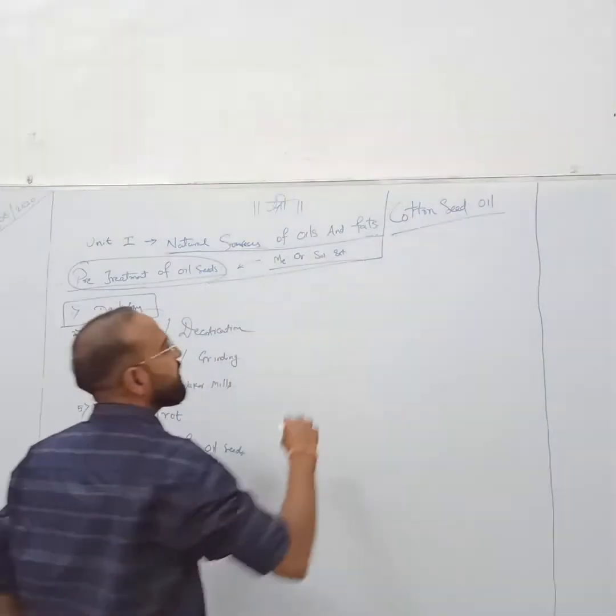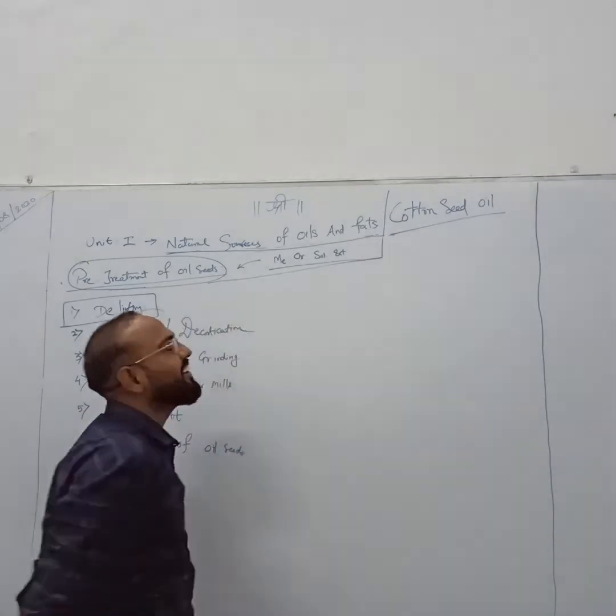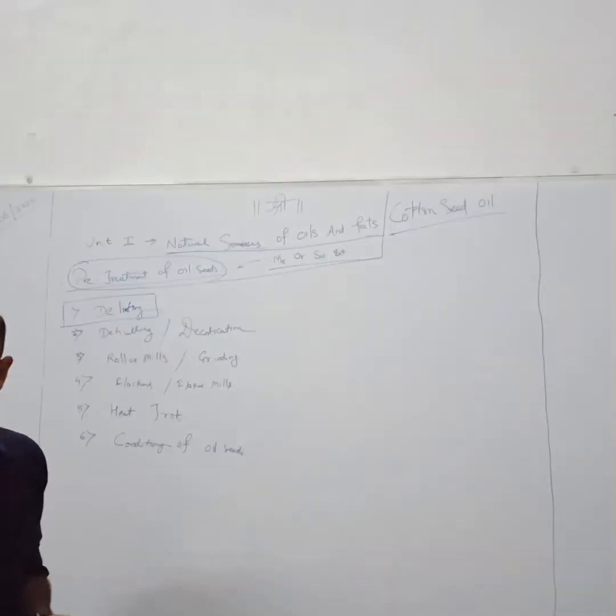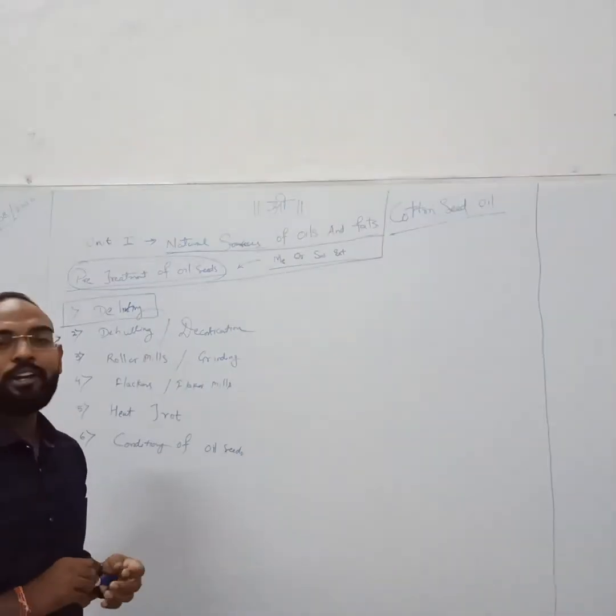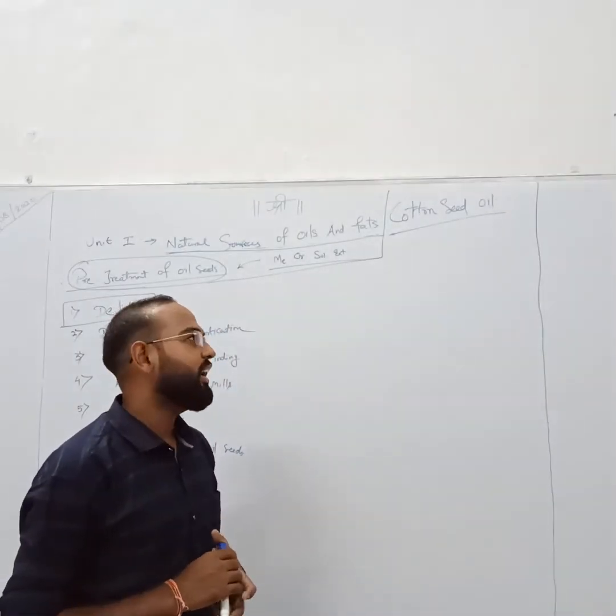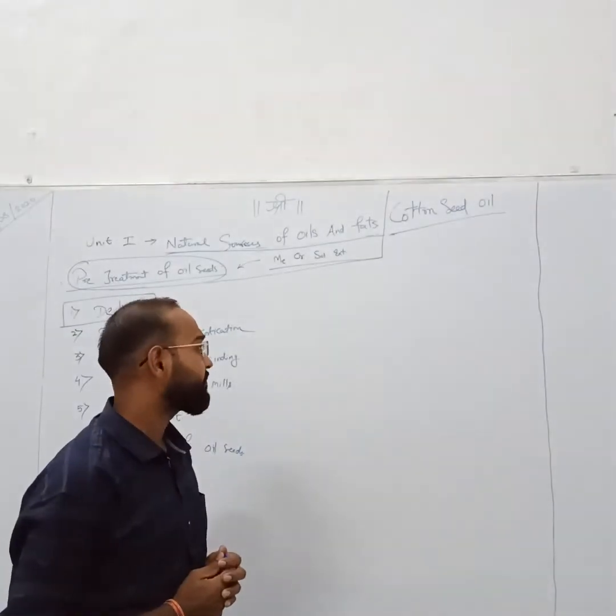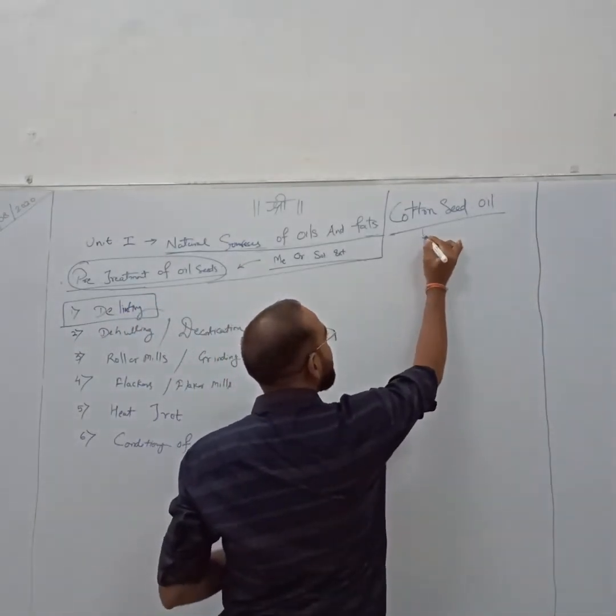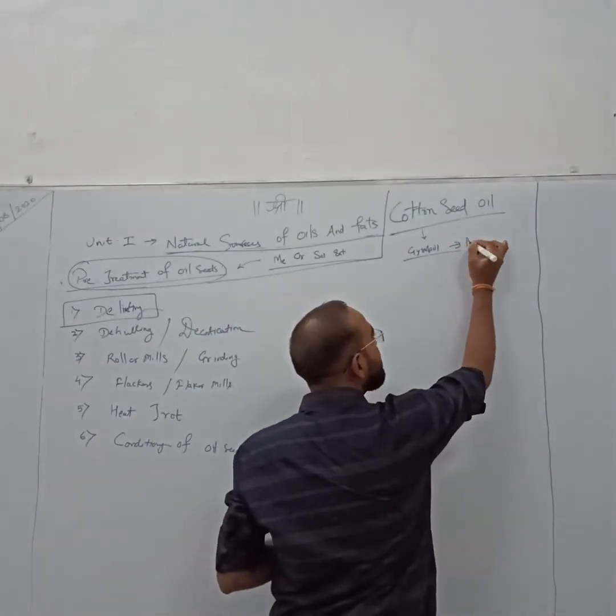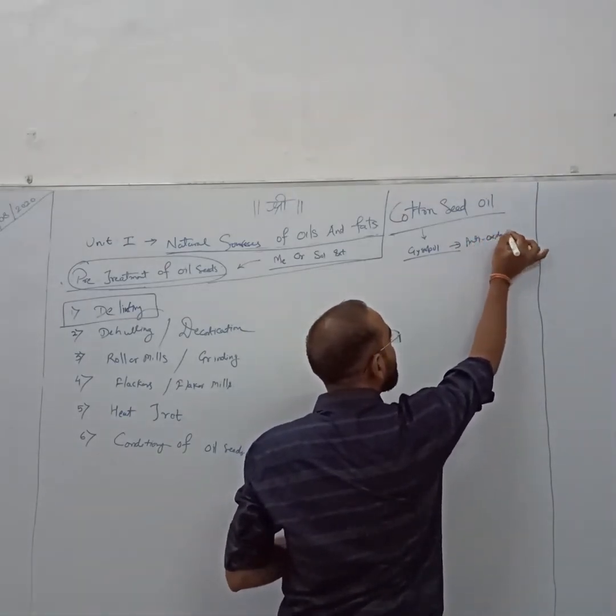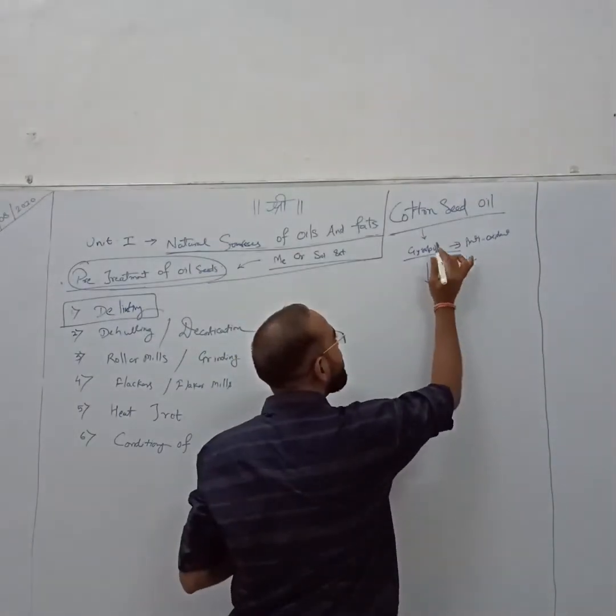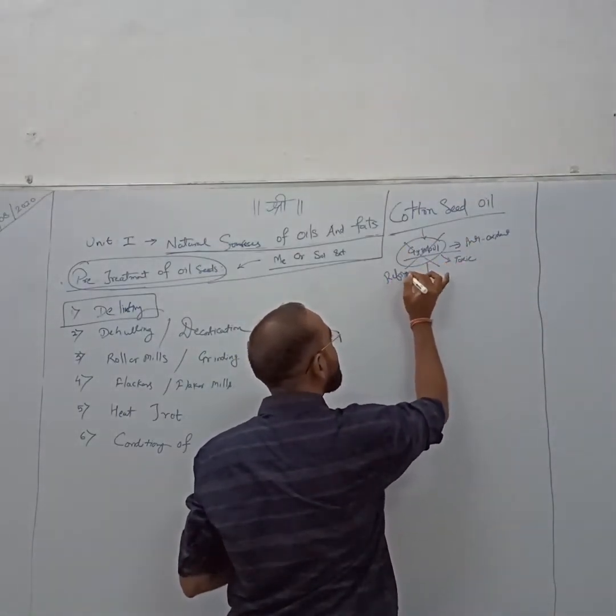Before starting the pretreatment, I just want to say few words about cotton seed oil. Cotton seed oil is basically dark reddish in color with a strong odor. It is useful in both food and non-food applications. In non-food applications it is useful in pesticides and insecticides. In food applications it is used as a cooking oil. Then it contains one component that is Gossypol - it is an antioxidant but at the same time it is toxic in nature and should not be consumed by humans, so in refining process you need to remove it.